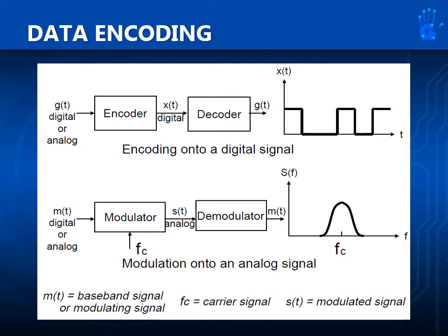The waveform on the right shows how a digital signal from an encoder looks like, with its amplitude plotted against time. As you can see, it only has two amplitude levels — the high and low levels. To extract the original baseband signal from this digital signal, it must pass through a decoder. The decoder is a collection of electronic components whose output will be the original baseband signal, G of T.